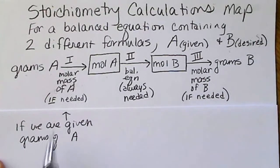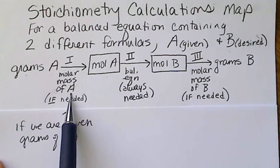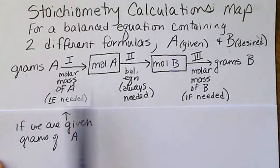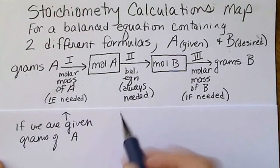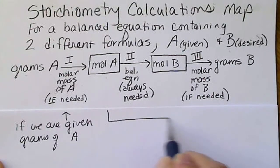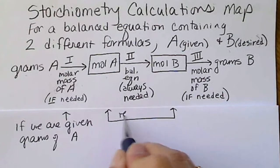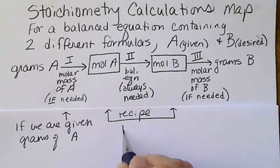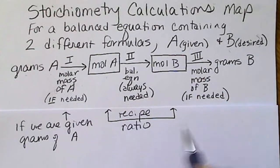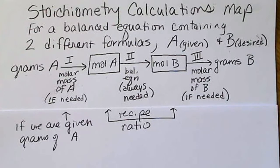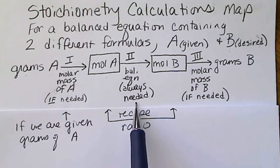So if we're given grams of A, we have to use the periodic table to convert from grams of A to moles of A. We always need to go from moles of A to moles of B because this is the recipe ratio. And so the recipe is always in moles. And remember, a balanced equation is the most common place that we do not see the unit mole written. So this step is always needed.